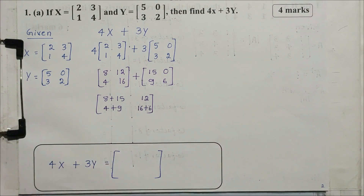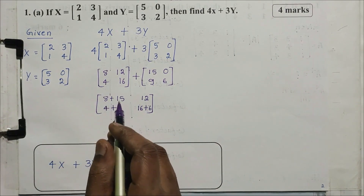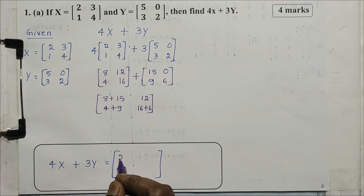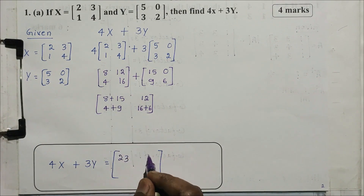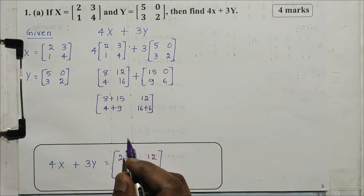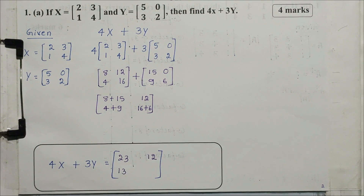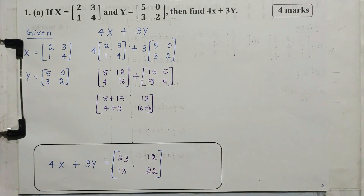Final addition: 8+15=23, 12+0=12, 4+9=13, 16+6=22. So the answer matrix is [23, 12, 13, 22]. That is the final answer — 4 marks.